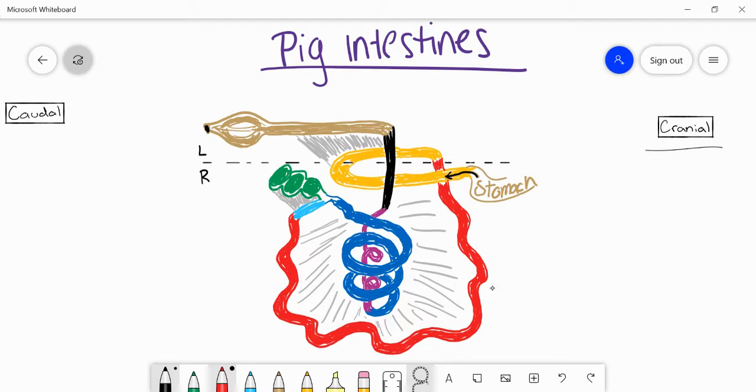Starting at the cranial end, we'll travel through the small intestine from the stomach and basically follow the path that the food would take as it makes its way towards the anus at the caudal end.